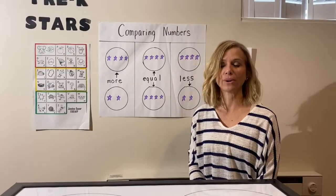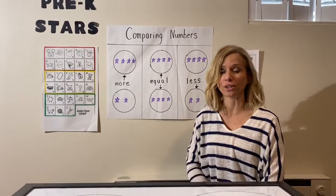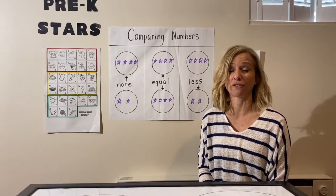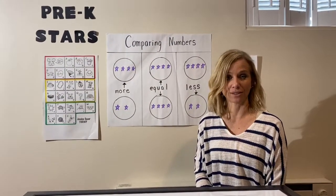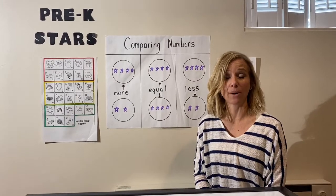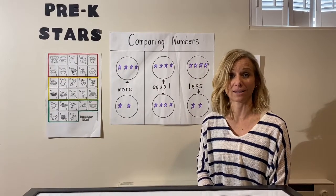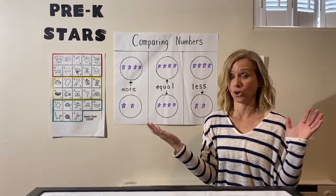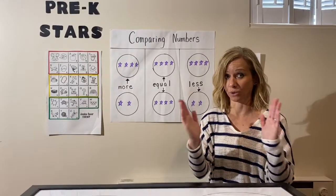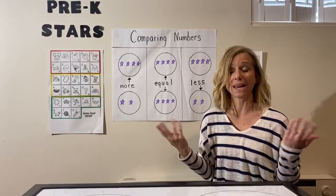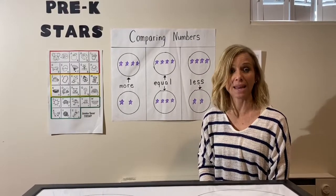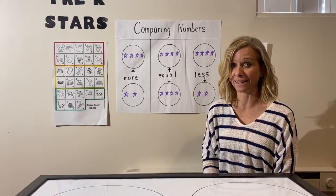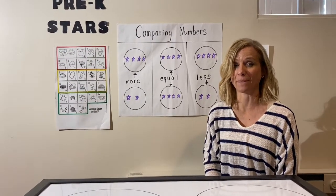Great job, boys and girls! Now what I want you to do is compare the number of shoes that your family members have. Go around and count how many shoes each family member has. Then decide who has more shoes — the greatest amount — who has less shoes, which means the smaller number, and does anybody have the equal amount of shoes, the same number. Go around and compare the number of shoes your family members have.